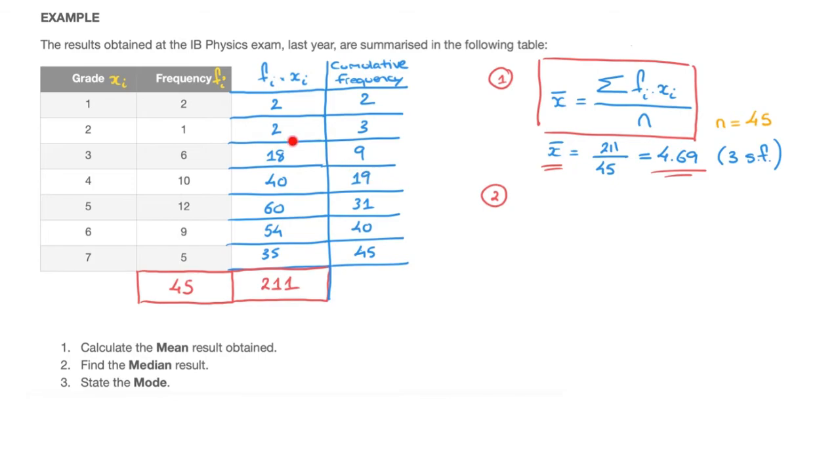Each of these cumulative frequency values tells us how many grades were less than or equal to the grade on the same row. For instance, the 9 here tells us that the first 9 grades were less than or equal to 3. Or the 3 here tells us that the first 3 grades were less than or equal to 2. But now, when looking for the median value, I like to add a little more. I like to indicate which values fall inside each row of my table.